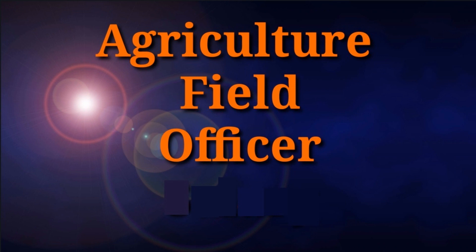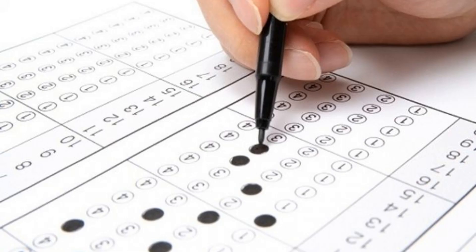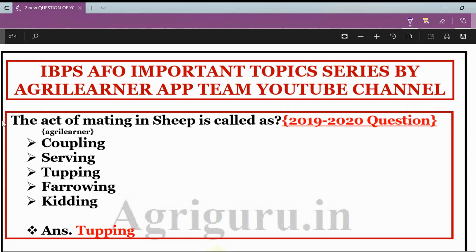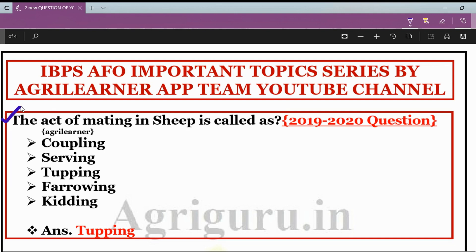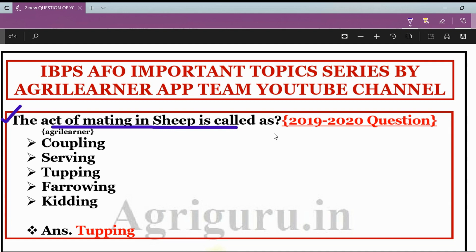First of all, we will see what IBPS asked in their previous year questions — which type of questions were asked in this particular topic. As you can see, the first question is: the act of mating in sheep is known as — this question was asked in IBPS Agriculture Field Officer 2019-20 Mains Exam.